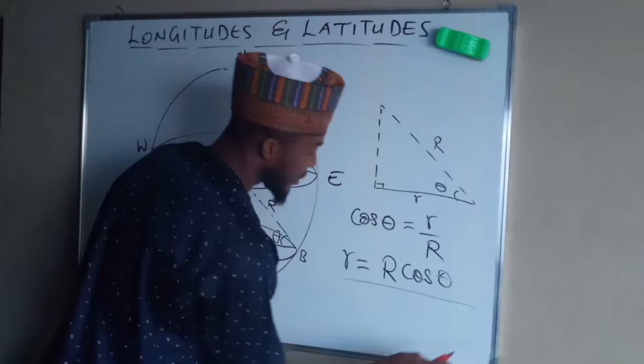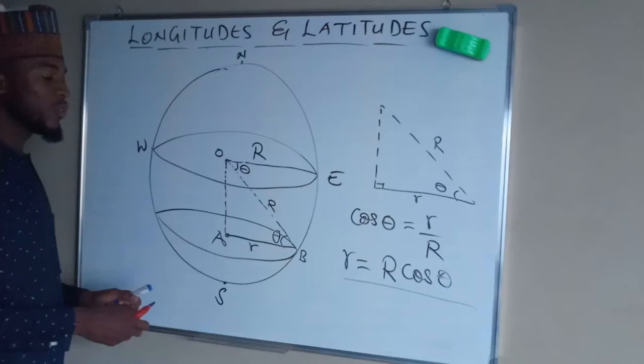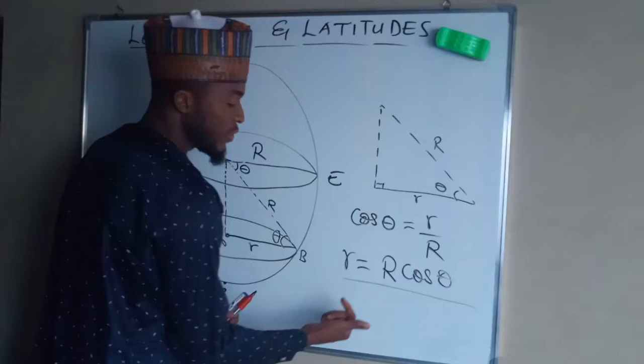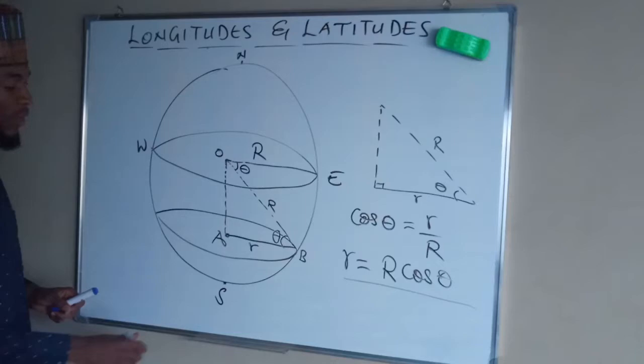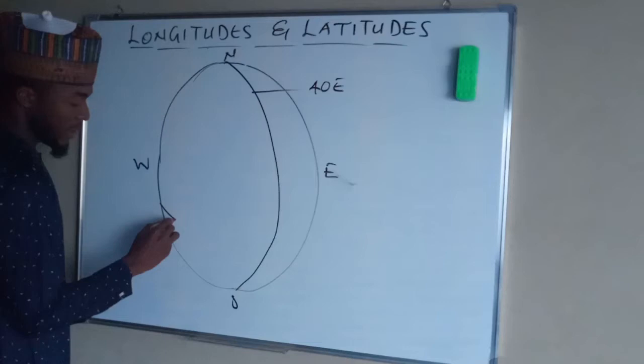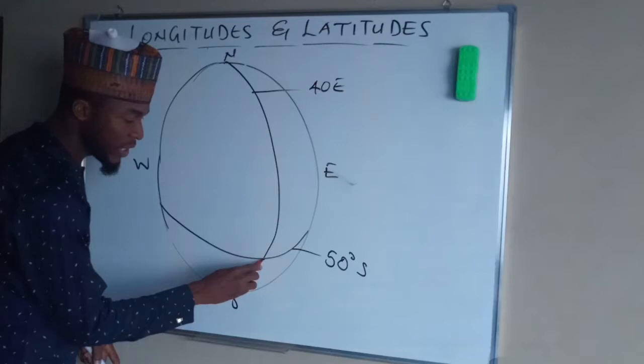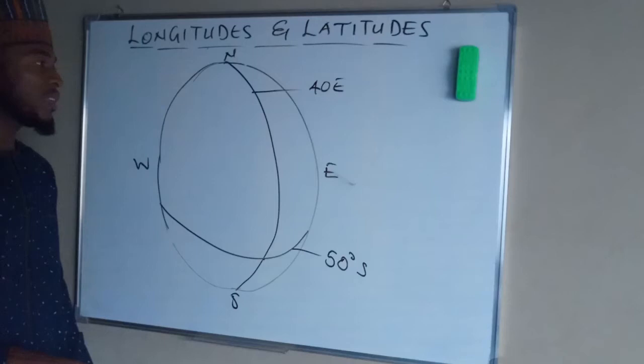By cross multiplication, small r equals capital R cos θ. This is the relationship between small r and capital R. Capital R is constant at 6400 kilometers, and small r varies depending on the latitude. So suppose we have a longitude at 40 degrees east and another latitude at 50 degrees south — the intersection between a longitude and a latitude determines a particular position.